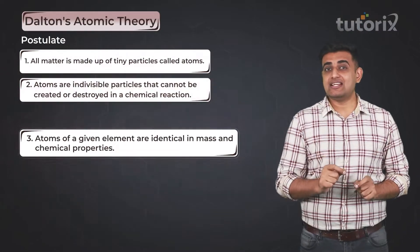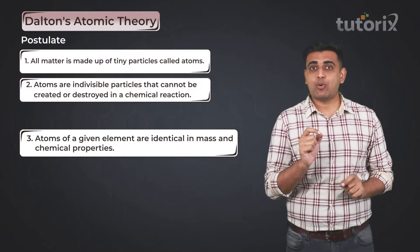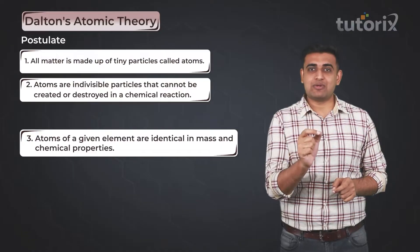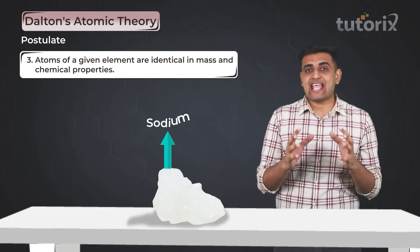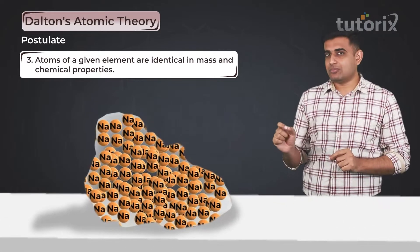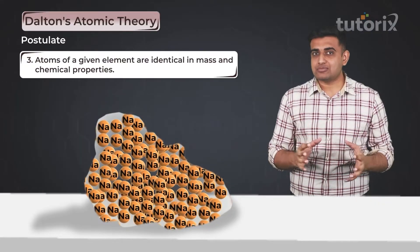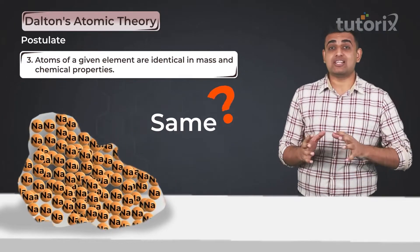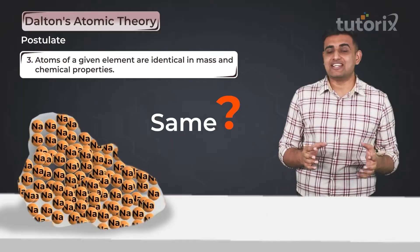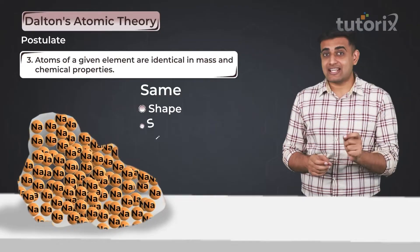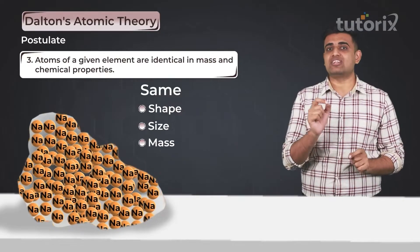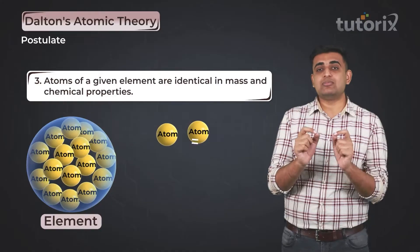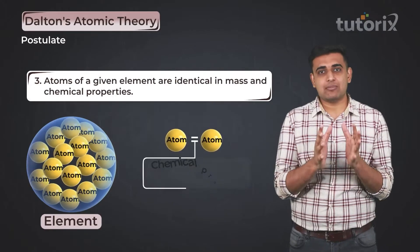Moving to the third postulate, John Dalton explains that atoms of similar elements are identical in their mass and chemical properties. For example, if we zoom into a piece of sodium, all the atoms making up sodium are just the same — in terms of their shape, size, mass, and chemical properties. In short, according to the third postulate, atoms of the same element have identical chemical and physical properties.